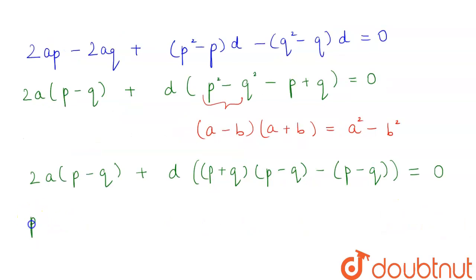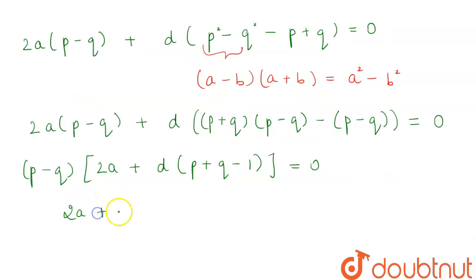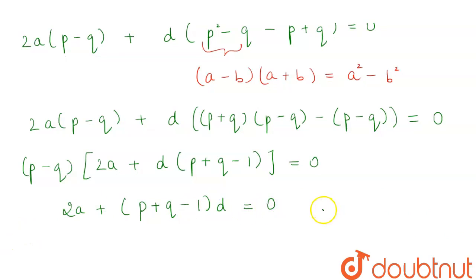From the whole term, if we take P minus Q to be common, we will be left with 2A plus D into P plus Q minus 1 and this is equal to 0. From here, we will get the value of 2A plus P plus Q minus 1 into D to be equal to 0. Because we know that if P minus Q is equal to 0, then P will be equal to Q which is not possible because there are different terms. Therefore, 2A plus P plus Q minus 1 into D is equal to 0.